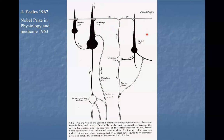The cerebellar cortex operates as a clock because signals conveyed via parallel fibers activate one Purkinje cell, then with a regular delay activate the next Purkinje cell. This regular delay in sequential activation of Purkinje cells means the system must operate in the form of a clock.